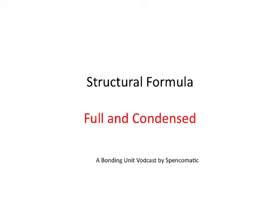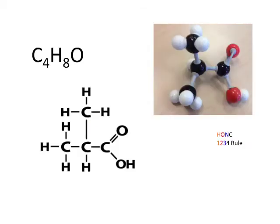In this video I want to talk about structural formulas, and in particular how to draw full and condensed structural formulas. So let's start off. We have a molecular formula here - it's C4H8O. So there's four carbons, eight hydrogens, and one oxygen.